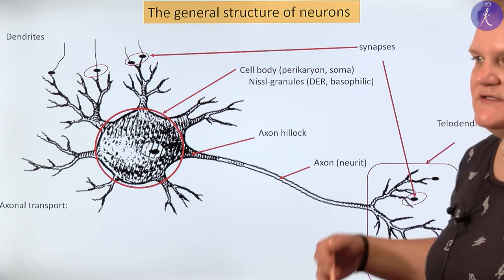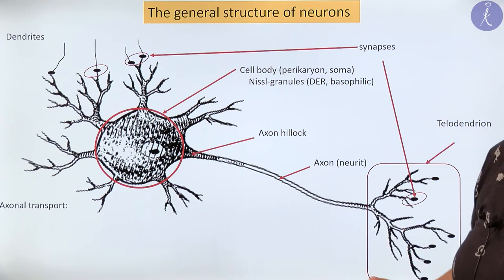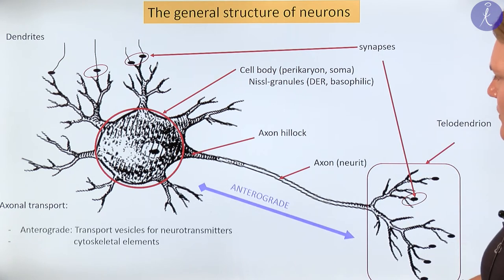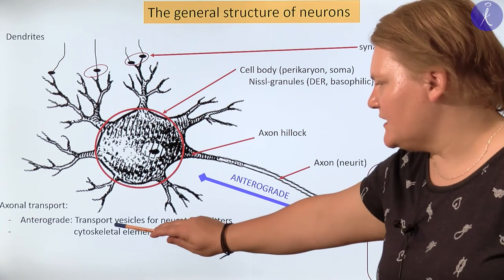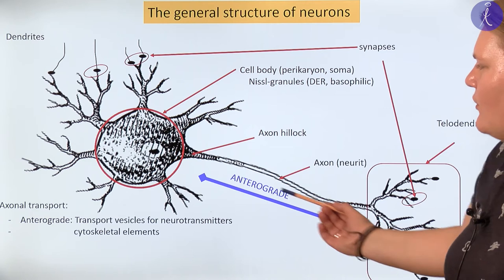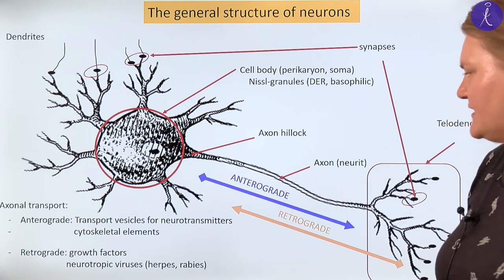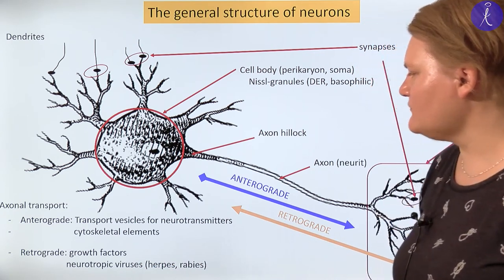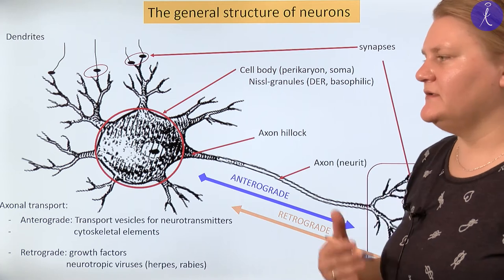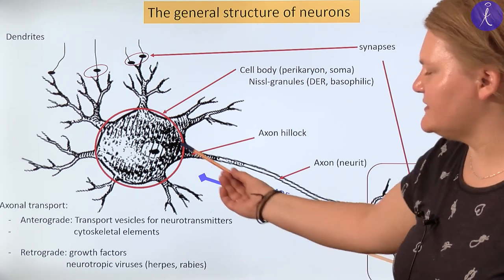The cell body of the neuron produces substances that must be transported within the neuron. This transport process is called axonal transport. If the flow goes from the direction of the pericaryon toward the terminal arborization, this is called anterograde axonal transport — transport vesicles and cytoskeletal elements use this process. We also have transport in the opposite direction, called retrograde axonal transport. Growth factors use this flow, which is especially useful during neuronal development and in cases of neuronal injury to help regeneration.